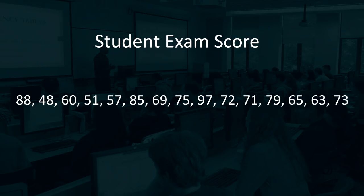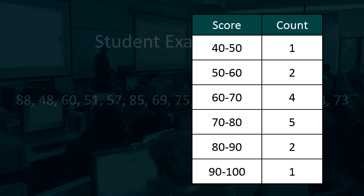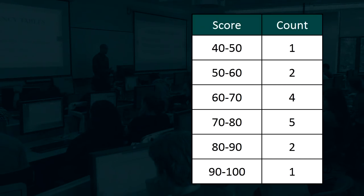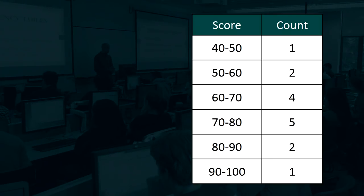Since our data set consists of exam scores, it makes sense to choose intervals that typically correspond to the range of letter grades — 10 points wide: 40–50, 50–60, etc. By counting how many of the 15 observations fall in each of the intervals, we get this table.